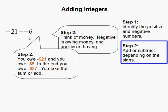So you owe $21, you owe $6. So you're going to owe $27 in the end. And in order to get this, you have to add $21 and $6 to get $27. And since you're owing even more money, it's going to be negative $27.